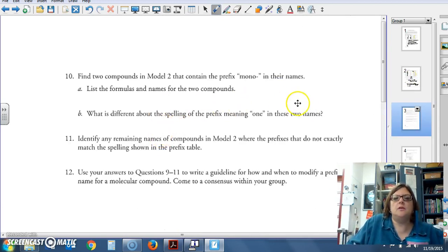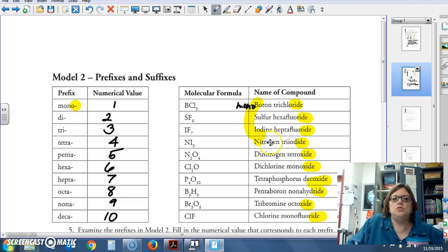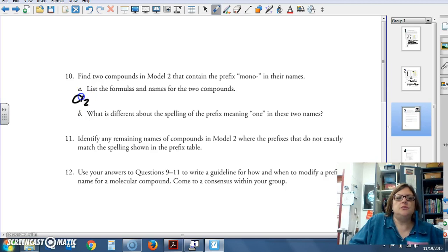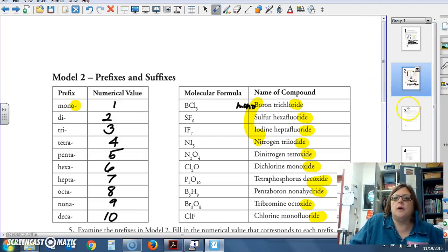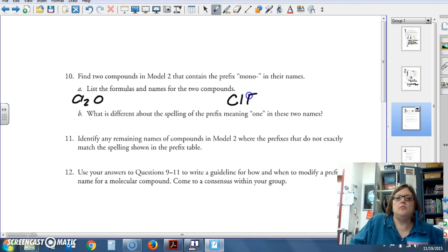Next page. Find two compounds in model two that contain the prefix mono in their names. Two compounds with mono. Dichlorine monoxide and chlorine monofluoride. So dichlorine, Cl2, monoxide, and I've already forgotten the other one. Chlorine monofluoride, which would be ClF. List the formulas. I'm not going to write the name. You already know the name. What is the difference about the spelling of the prefix meaning one in these two names? Well, dichlorine monoxide versus monofluoride, which I just explained to you. So you're good.